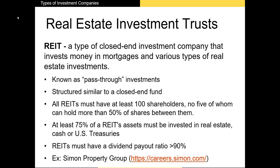Think about what happens when you invest in Apple stock: the operating income is taxed once at the corporate tax rate, and then again at the dividend tax rate when distributed. To balance the REIT tax benefit, REITs are governed by strict laws on what they can invest in and how they distribute cash. First, all REITs must have at least 100 shareholders, and no five of them can own more than 50% of shares between them. Second, at least 75% of a REIT's assets must be invested in real estate, cash, or US Treasuries. Finally, REITs must have a dividend payout ratio greater than 90% — so if a REIT generates $10 million in profit, it must pay out at least $9 million to investors.